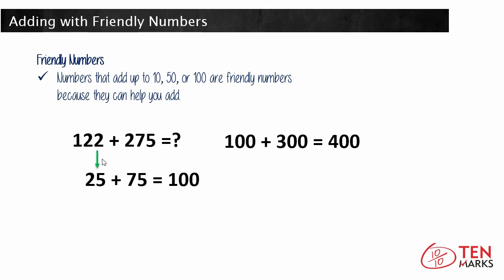But don't forget, you originally made the 22 a 25 so that you could add the 25 to 75 to get this friendly number, 100. So you need to take the 3 that you added to 25 and take it away from this total that you just found.